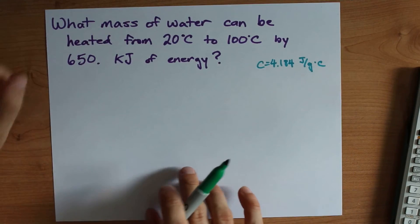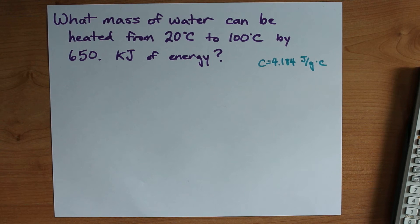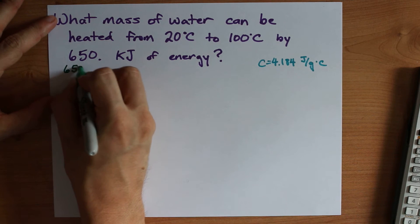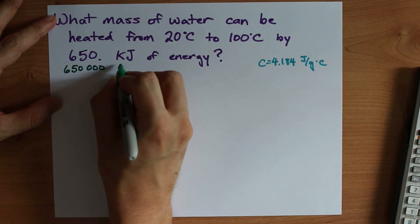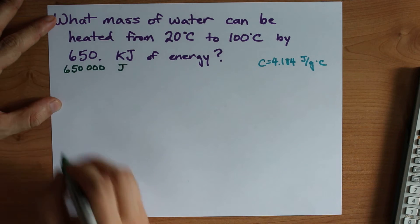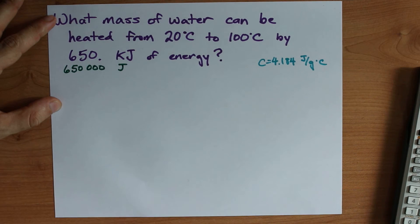For example, what mass of water can be heated from 20 to 100 by 650 kilojoules of energy? The first thing I want to point out is that 650 kilojoules is 650,000 joules. I'm just multiplying by a thousand to get that value.